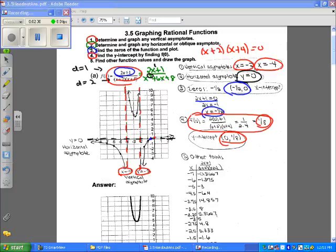And then you want to find some other points. That's step 5. Find some other points to get the rough idea for the graph. What I do is I actually use my calculator to do this, so I'm going to pull it up real quick here.